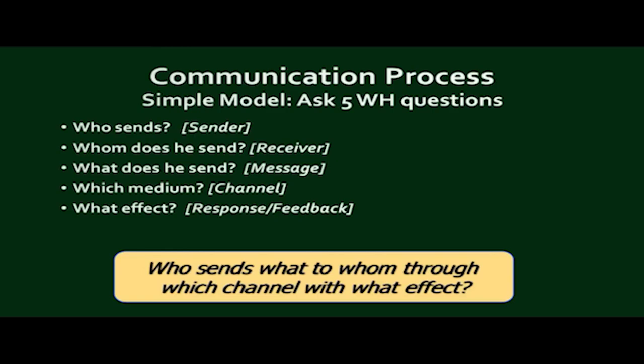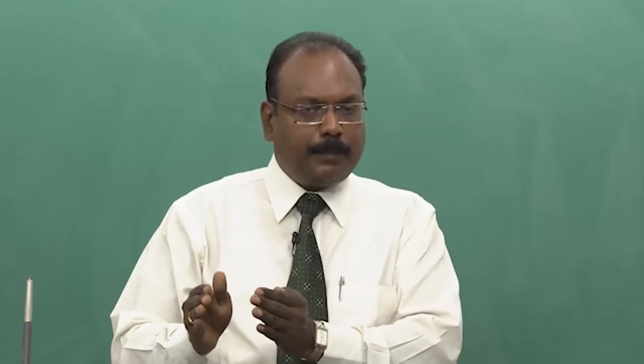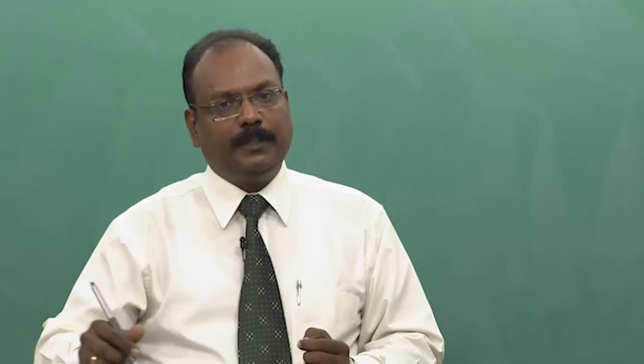A simple way to remember the communication process is to ask five WH questions: Who sends is the sender; whom does he send is the receiver; what does he send is the message; which medium or how does he send is the channel; what effect is he sending is the response or feedback. In short: who sends what to whom through which channel with what effect — that is the communication process. If you care at each and every point of communication, you will become an effective communicator.